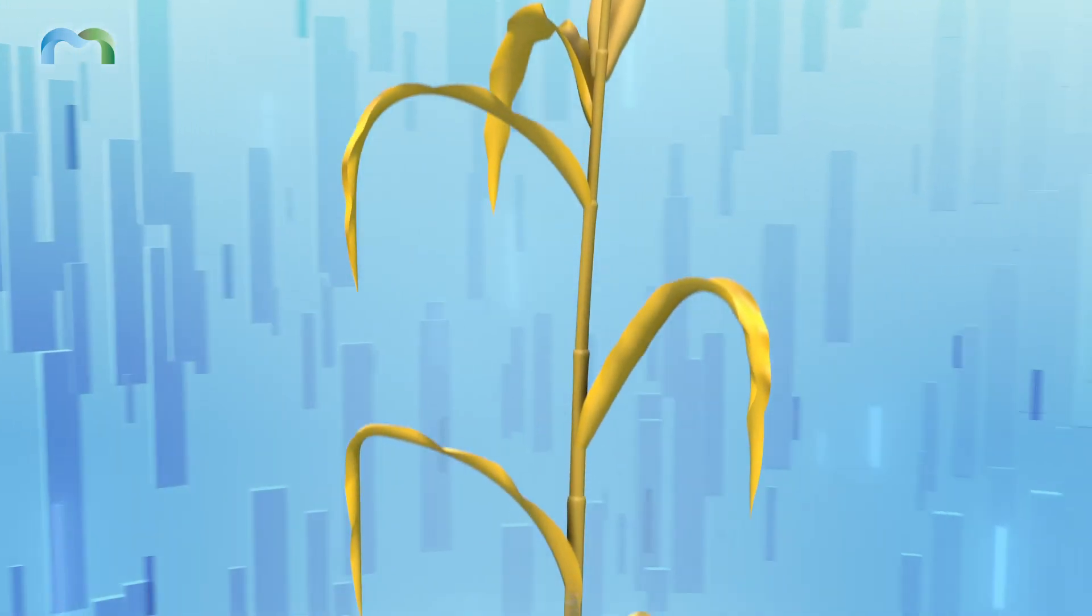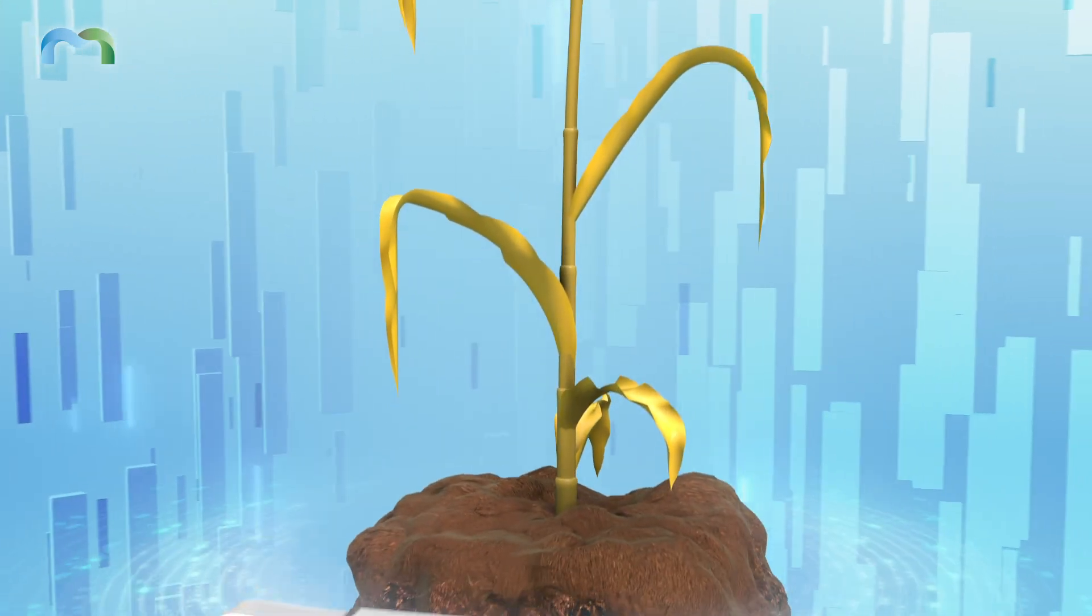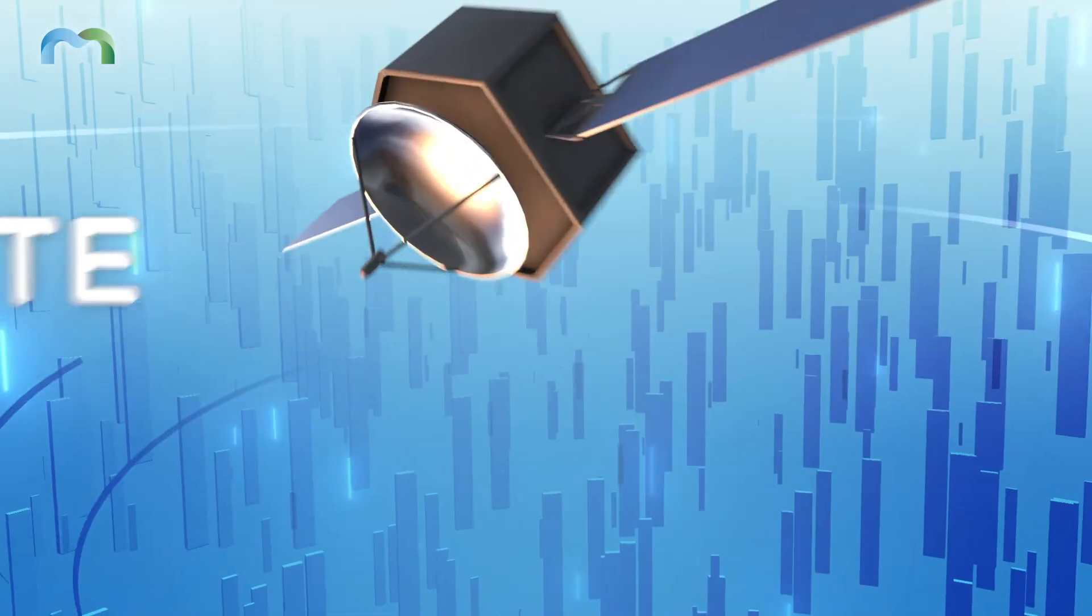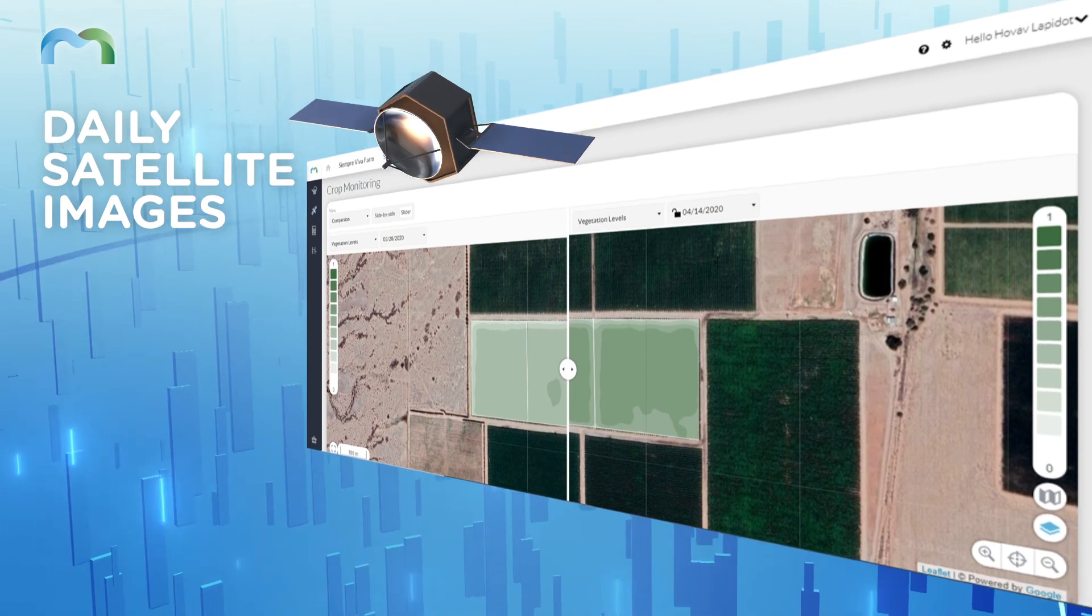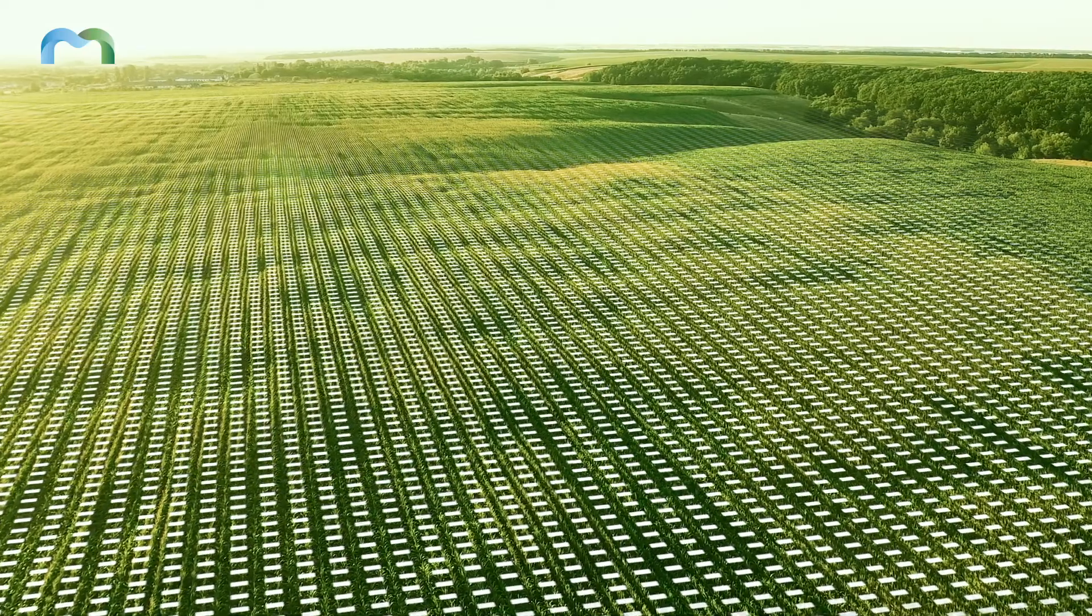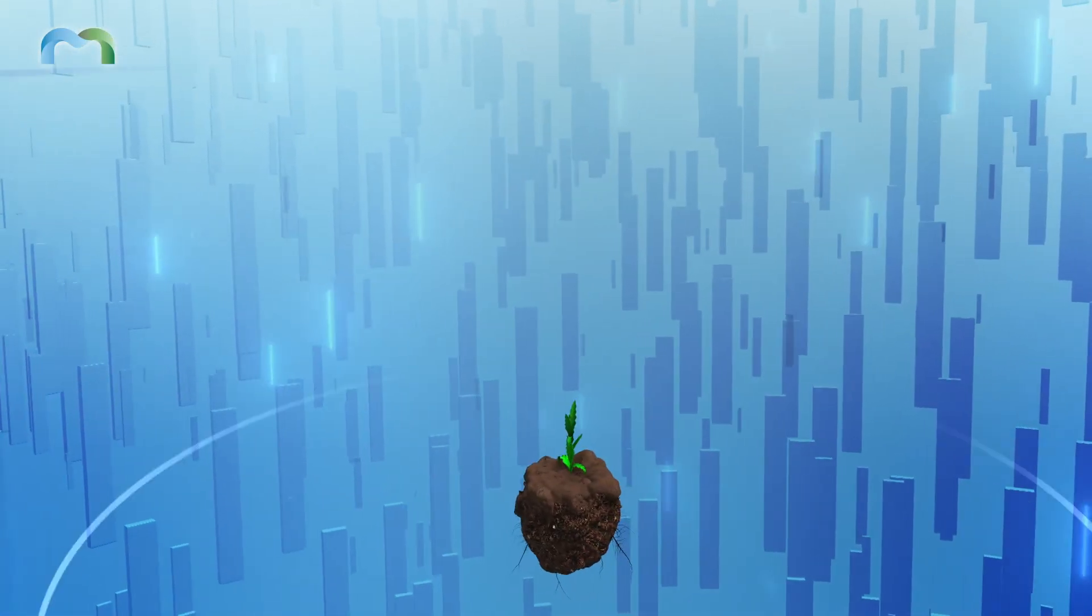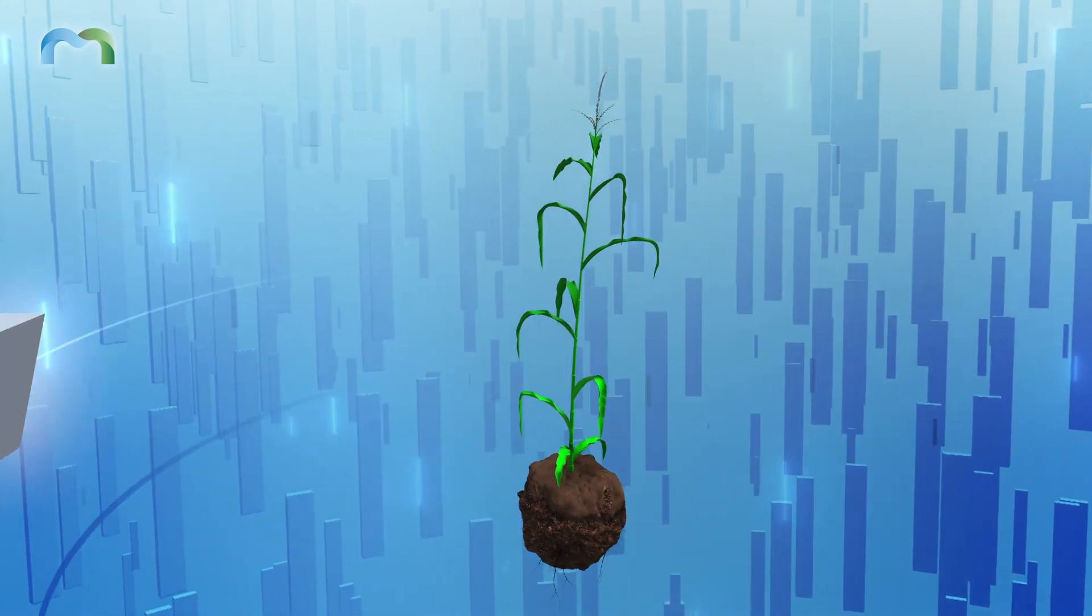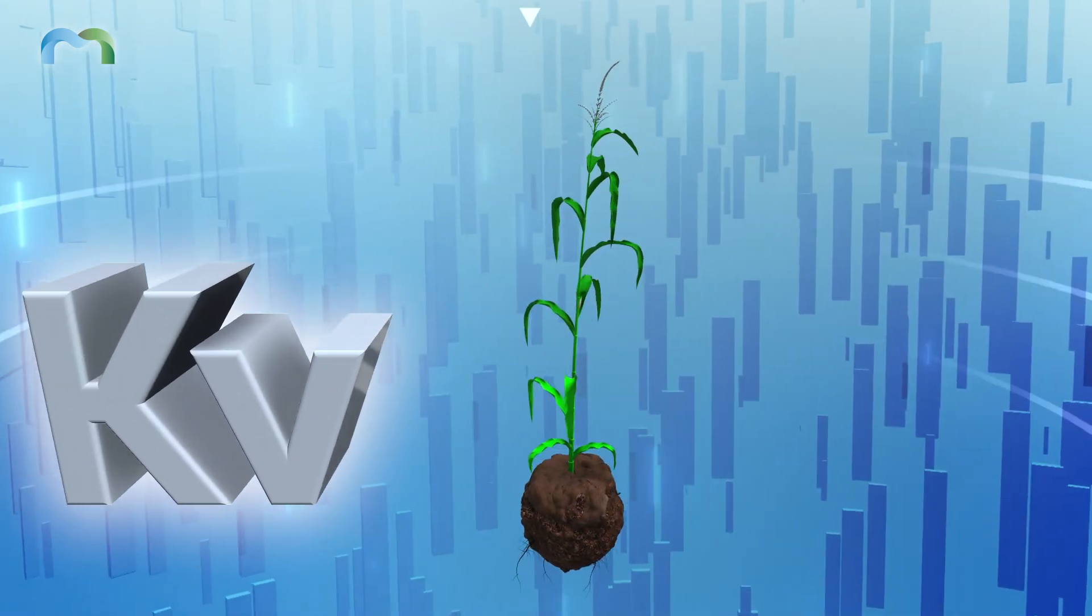MANA does away with this traditional approach by observing the field's actual evapotranspiration, which we call ETV. Using high-resolution daily satellite images, MANA detects the vegetation density of every pixel in your field. The crop coefficient depends entirely on the crop vegetation, so the MANA model transforms vegetation into the real crop coefficient, or KV.